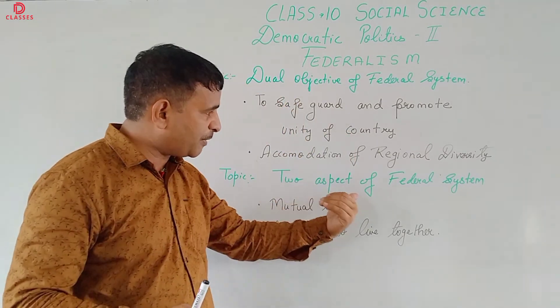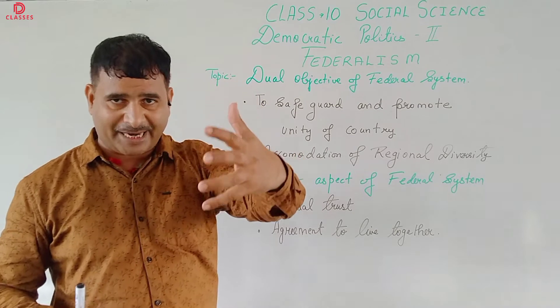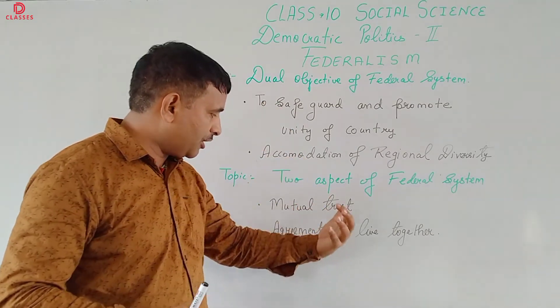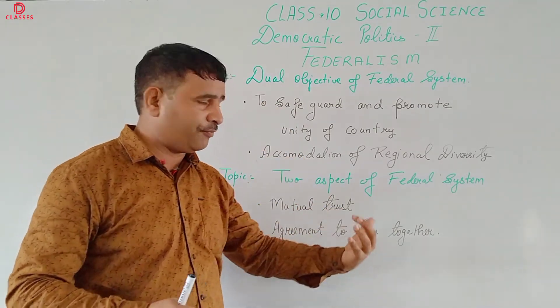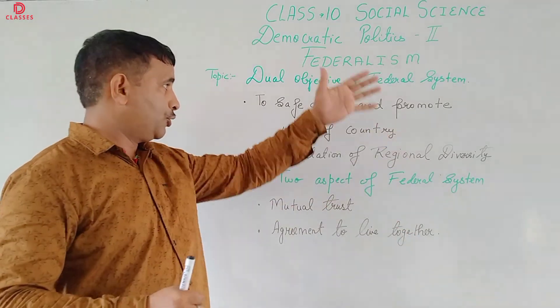Another topic of this test group is the two aspects of the federal system. The two aspects are: mutual trust and agreement to live together.